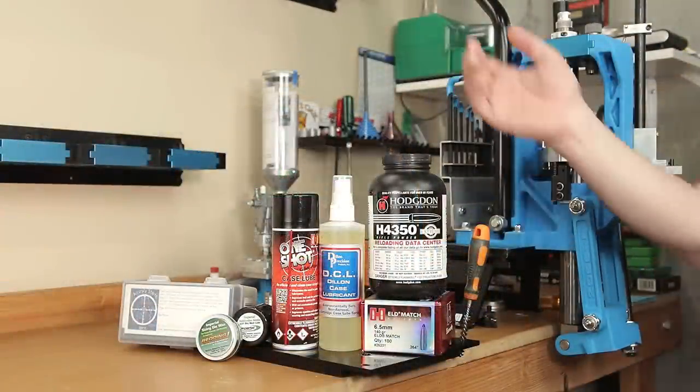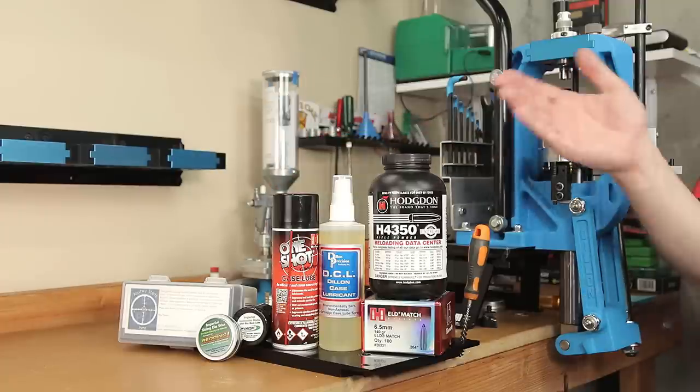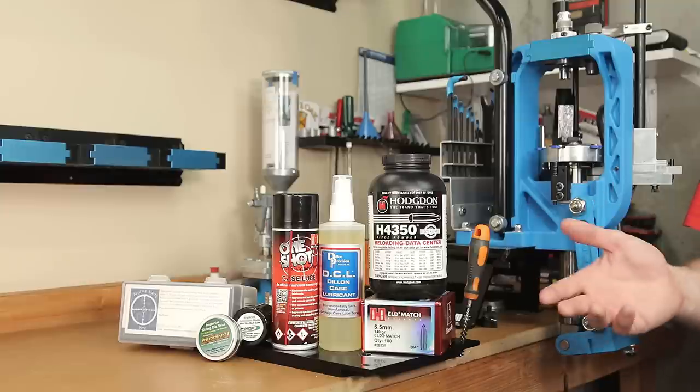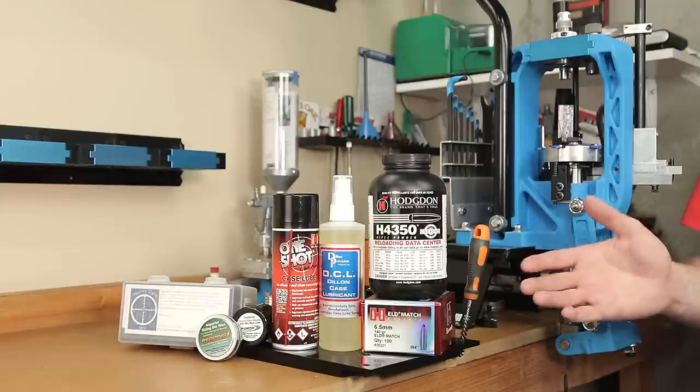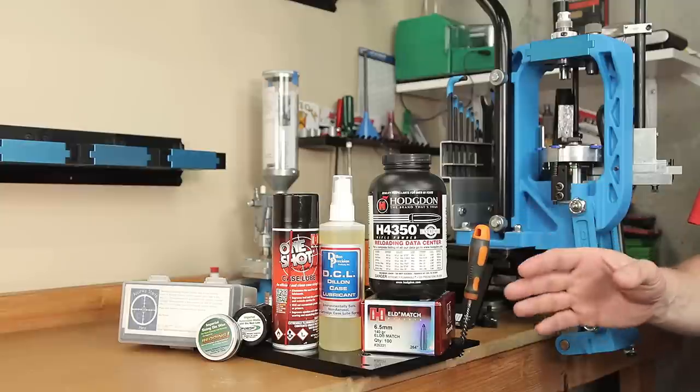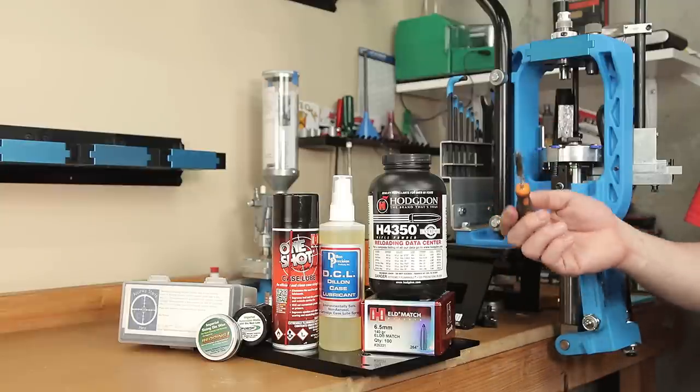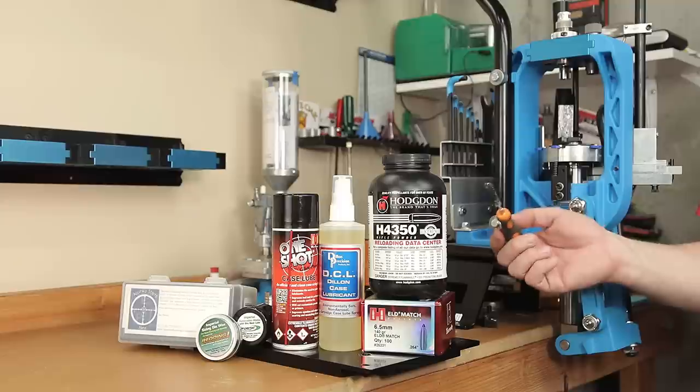The next option we're going to test is the Hornady One-Shot. Because I'm not sure how reliably we're going to be able to remove any of the Hornady One-Shot from the necks, we're simply going to be using our standard process: trimming to length, chamfering, deburring, and then just removing the chips with a brush.